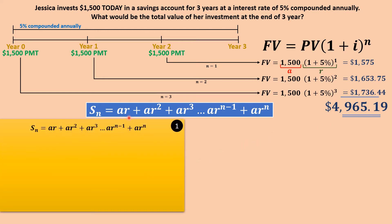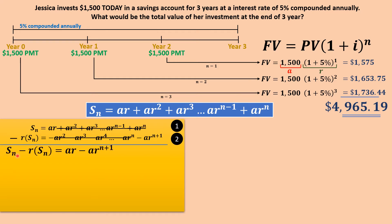Here's the geometric series equation. We'll do some algebraic manipulation — multiply the equation by r to get equation two, then subtract equation two from equation one. When we do that, common terms like ar², ar³, ar⁴ and so on cancel out. We're left with: Sₙ minus r·Sₙ equals ar times (1 minus rⁿ). Factoring and simplifying gives us: Sₙ(1 − r) = ar(1 − rⁿ).